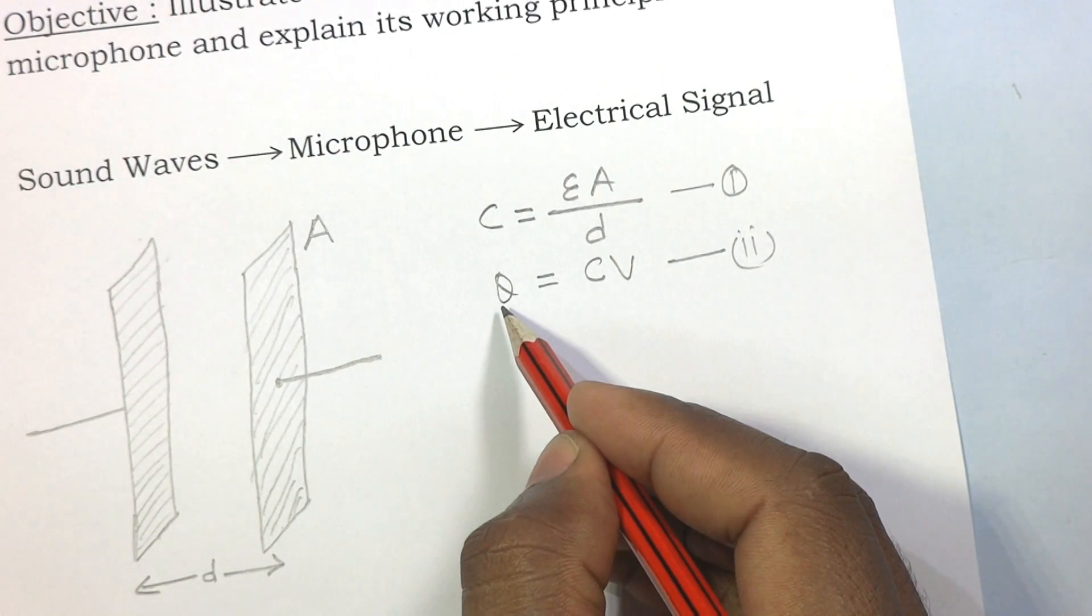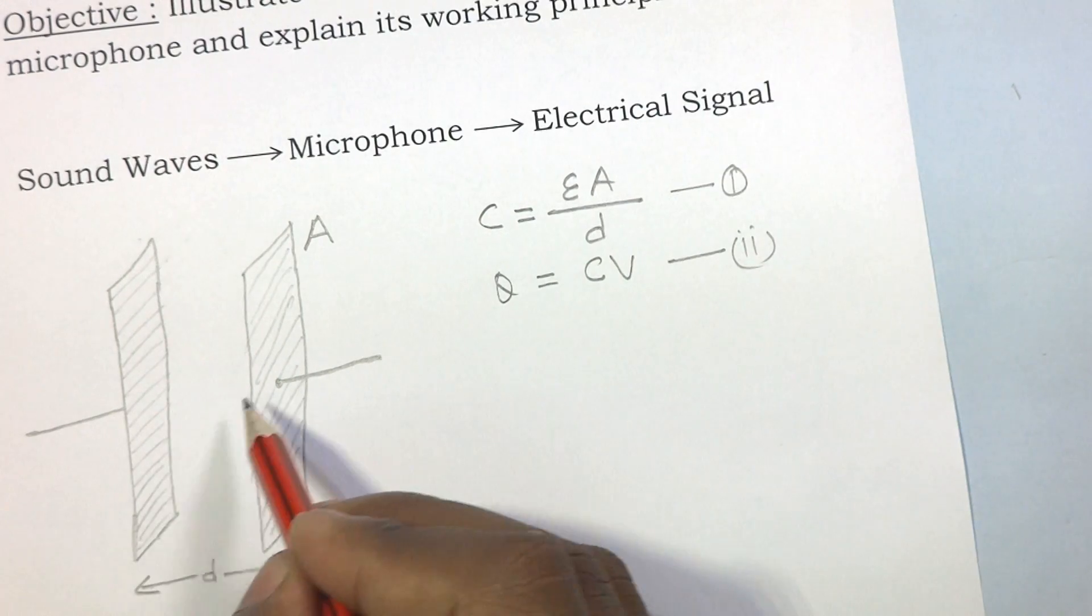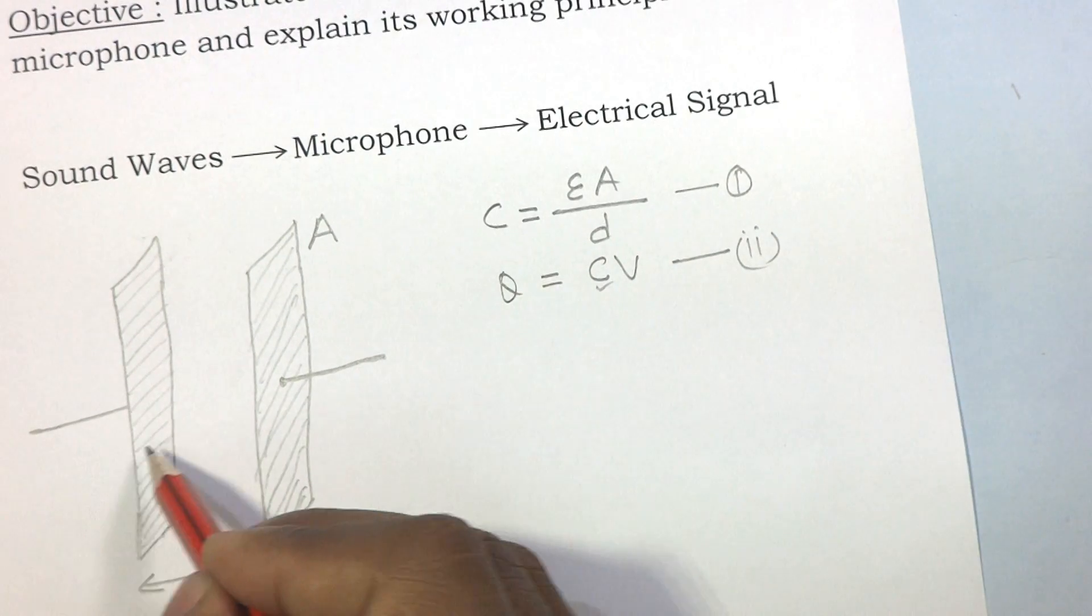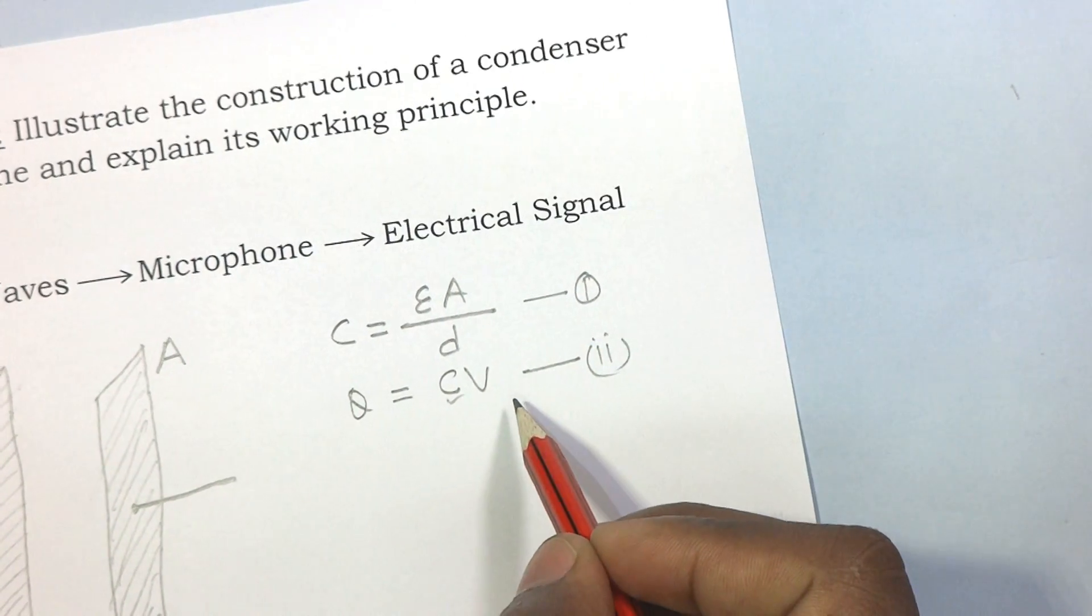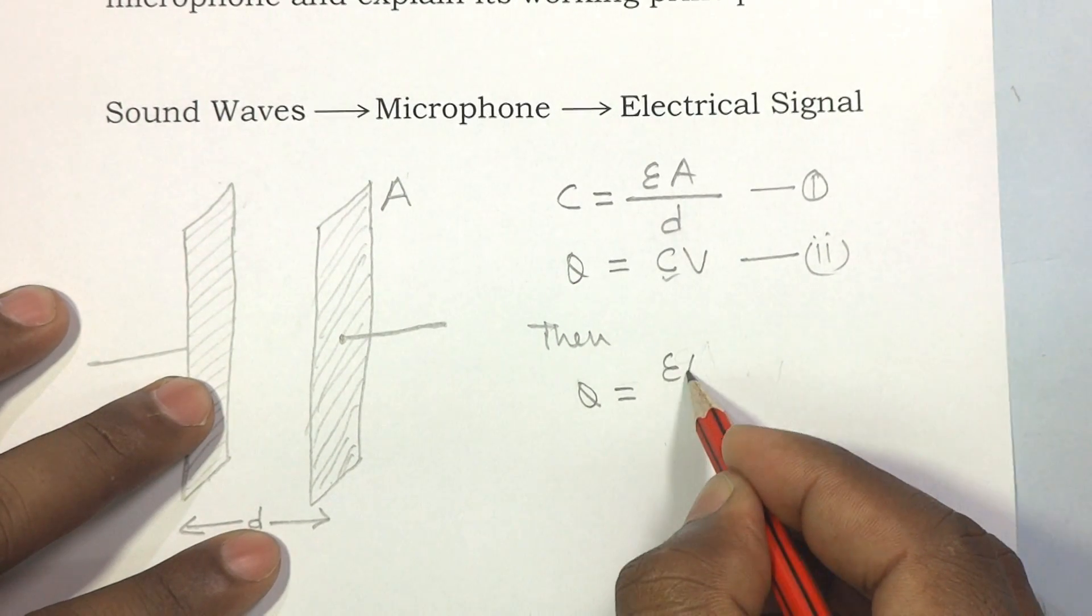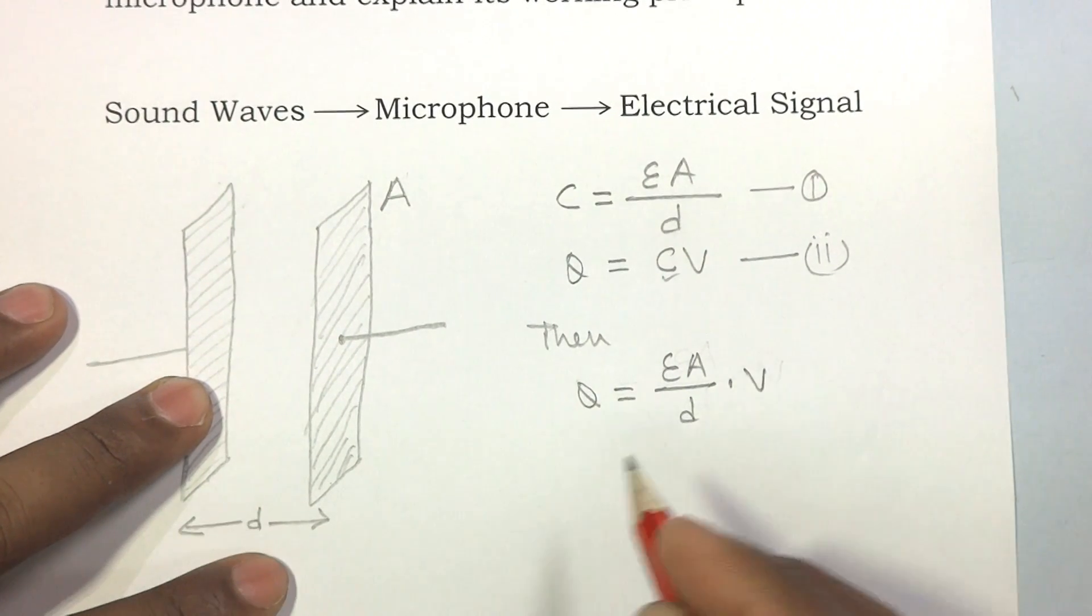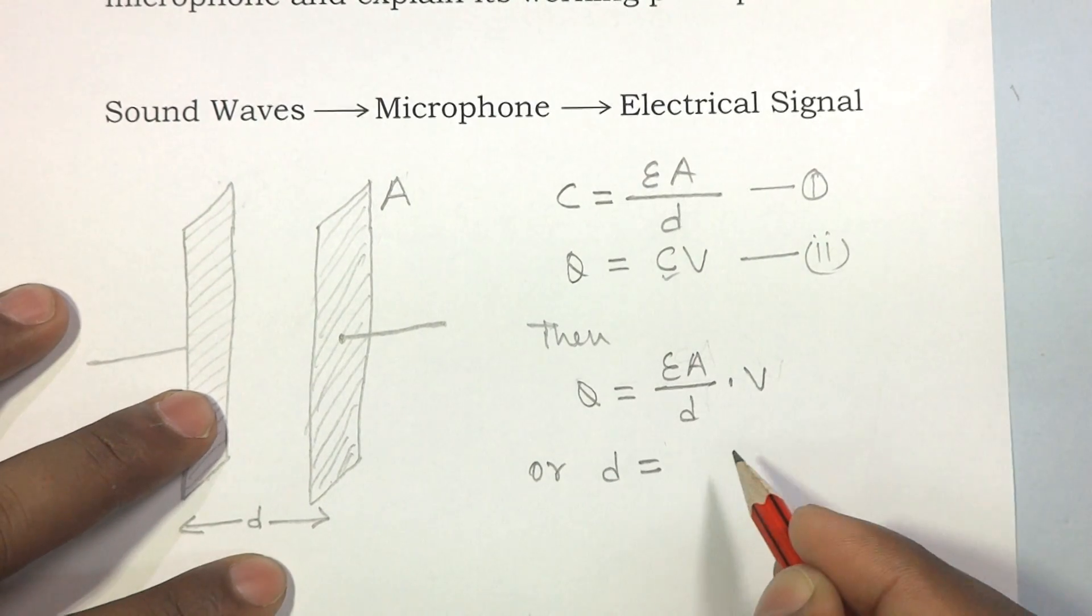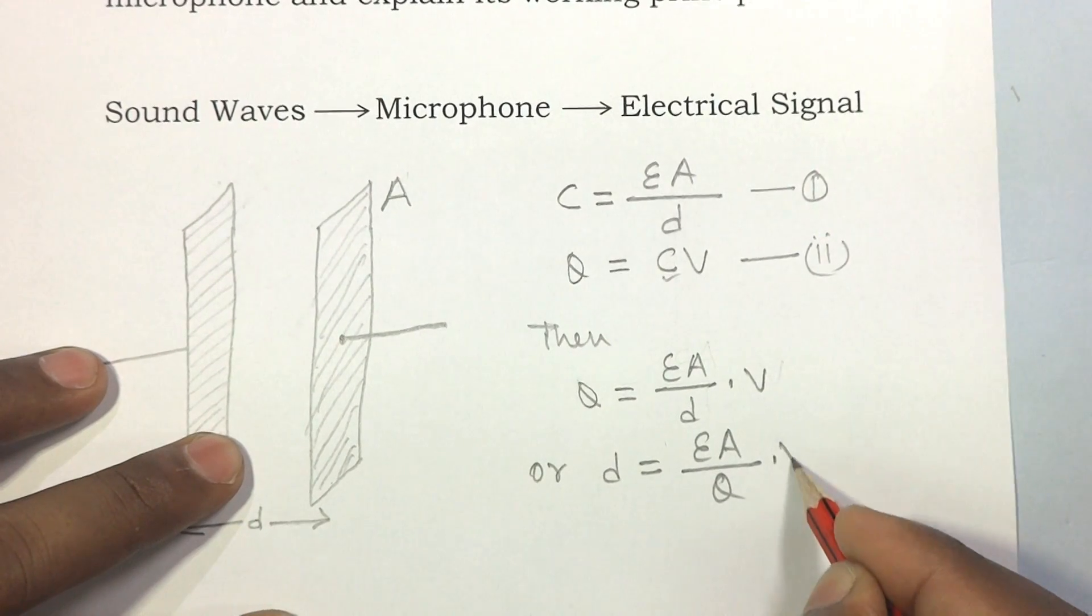C is the capacitance of this capacitor. In the second equation, Q is the quantity of charge stored on its plate, C is the capacitance, and V is the voltage across its plates. Put the value of C from equation 1 to equation 2. Then Q equals epsilon A by D into V, or D equals epsilon A by Q into V.